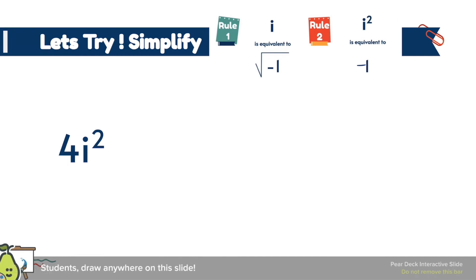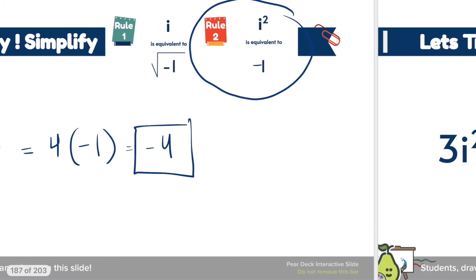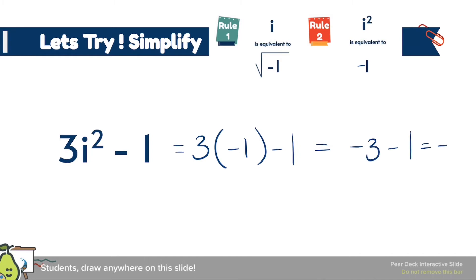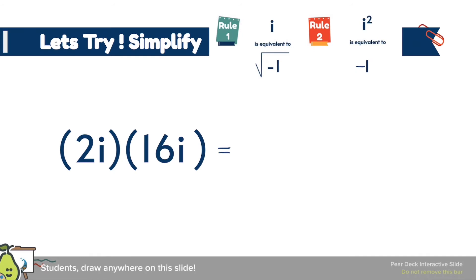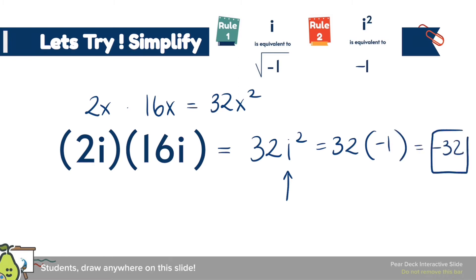Everything we've done used rule 1, but now we move to rule 2: i² = -1, meaning wherever you see i² just replace it with -1. So 4i² = 4 × (-1) = -4. For 3i² - 1, replacing i² with -1 gives a final answer of -4. For 2i × 16i, this is 32i², and since i² = -1, the final answer is -32.